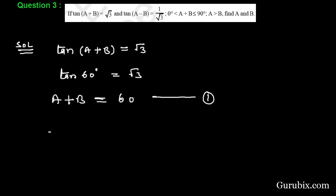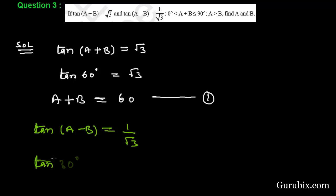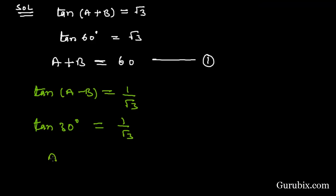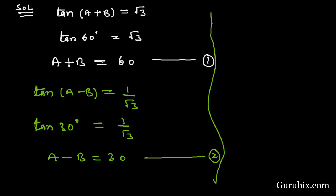We are also given that tan(a−b) = 1/√3, and we know that tan 30° = 1/√3. Therefore, comparing these two equations, a−b = 30°. This is our equation number 2.